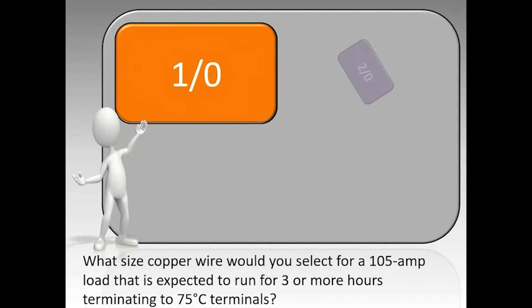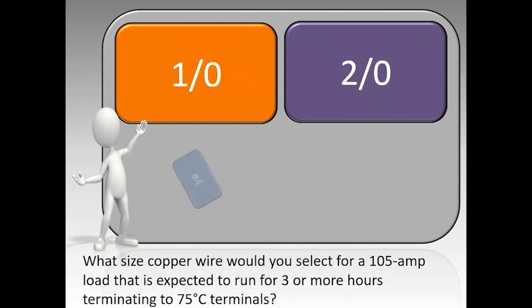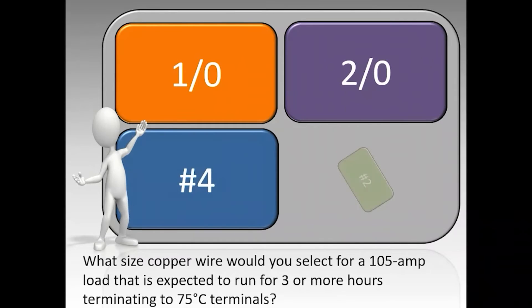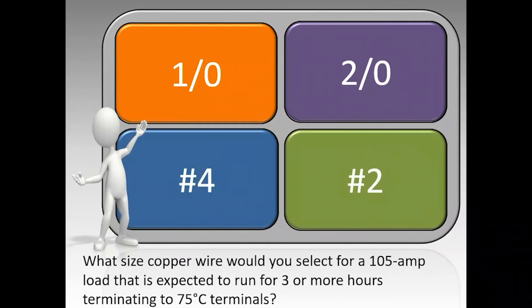What size copper wire would you select for a 105-amp load that's expected to run for three or more hours, terminating to 75-degrees-C terminals?